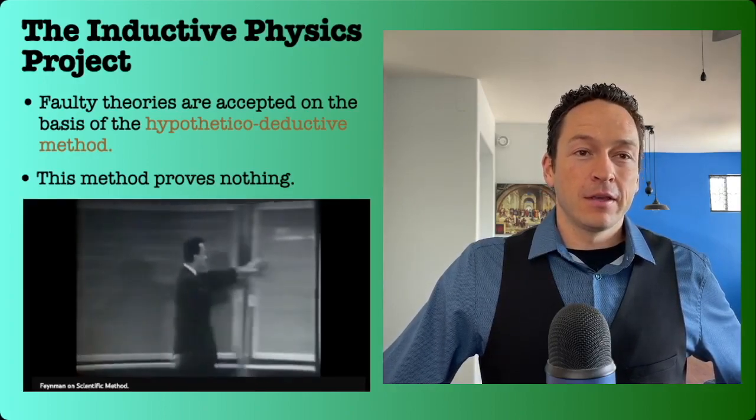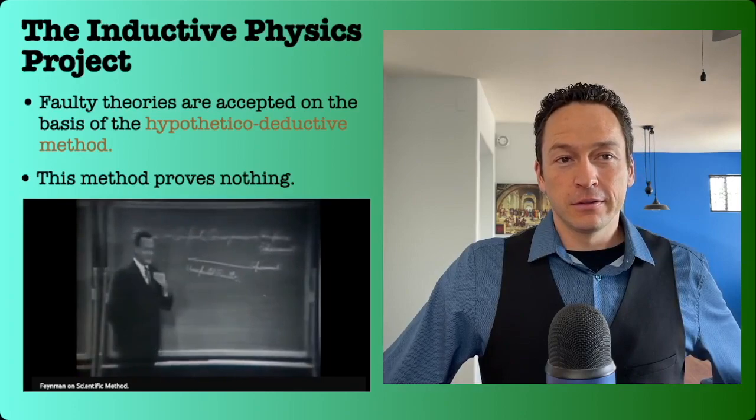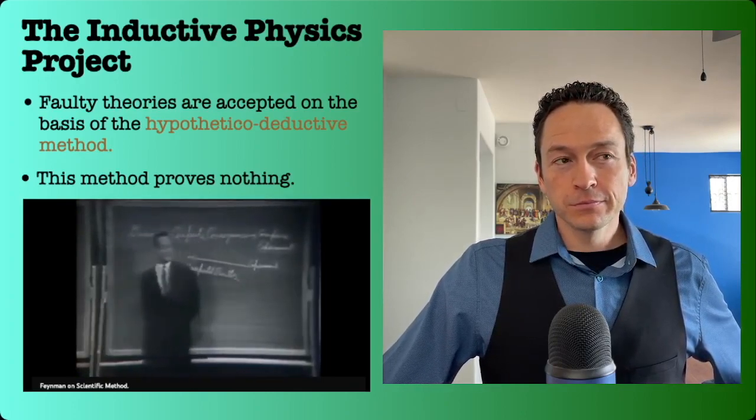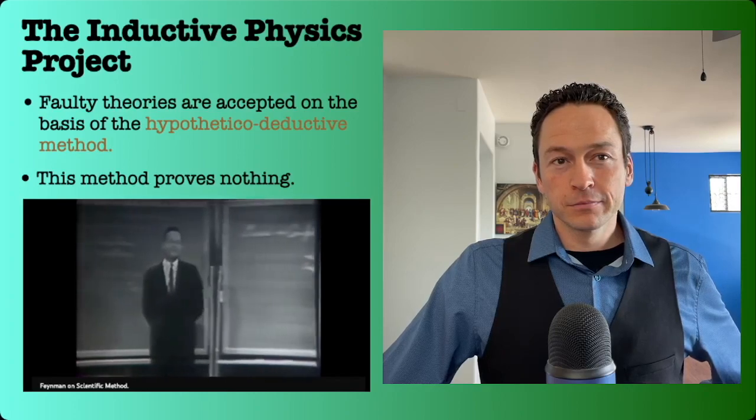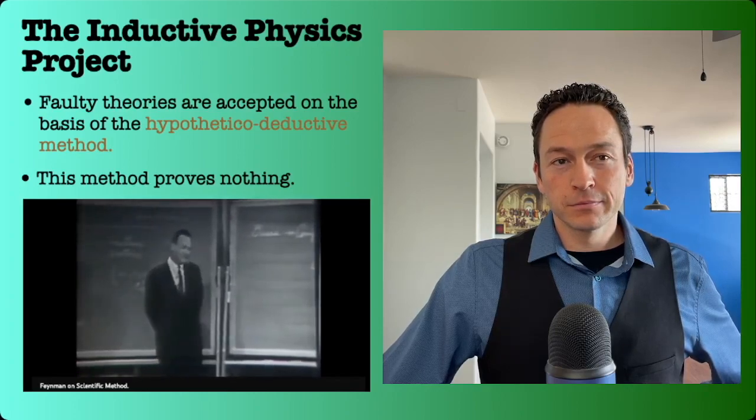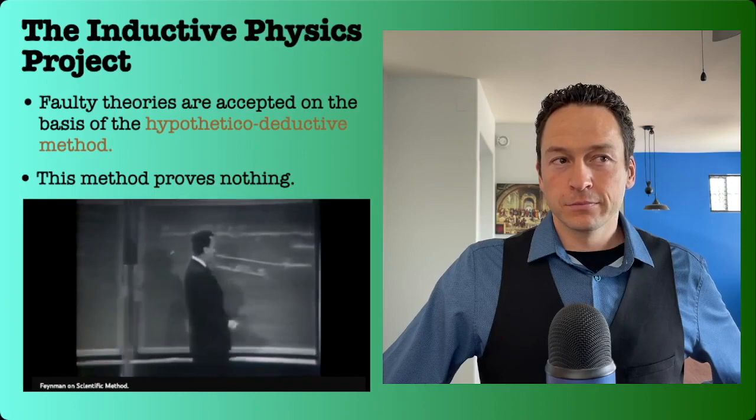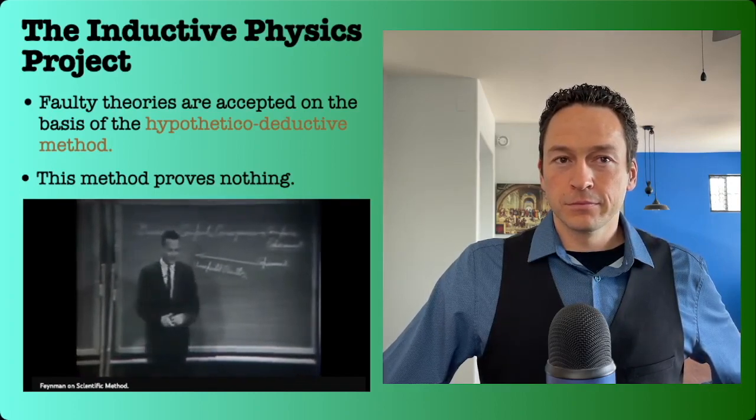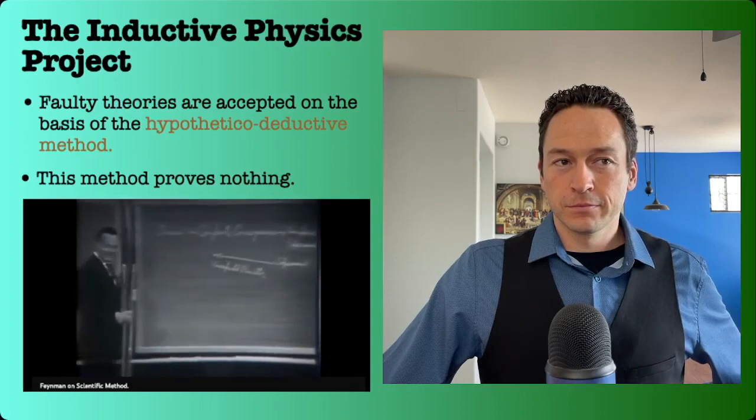Suppose that you invent a good guess, calculate the consequences, and discover that every consequence that you calculate agrees with the experiment. The theory is then right? No, it is simply not proved wrong. Because in the future, there could be a wider range of experiments, you could compute a wider range of consequences, and you may discover, then, that the thing is wrong.